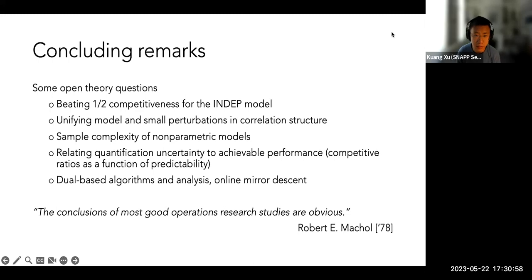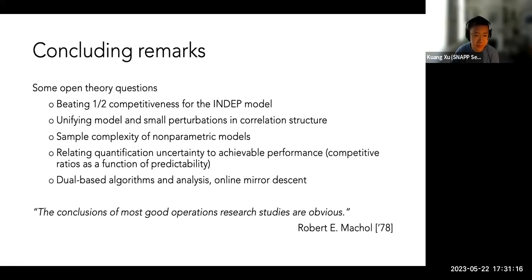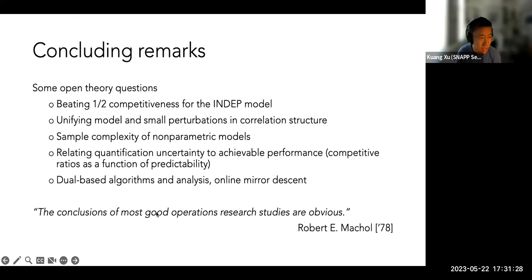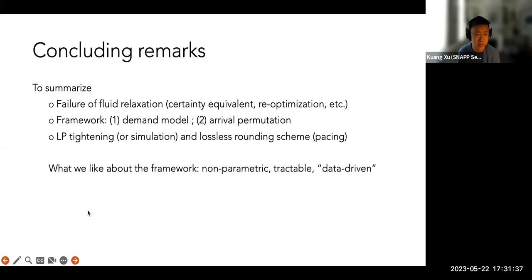In the Q&A, an audience member asks about a continuous-time version and whether the framework applies to platforms with gig workers where supply is also ongoing — noting that finite inventory depletion seems central to the nuance. The speaker agrees that the problem is most acute when demand bursts can wipe out available inventory, and confirms that dynamic matching where both supply and demand arrive online is a natural extension, though prior work in that direction assumed Poisson arrivals.